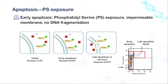7AAD is a nucleic acid dye that cannot penetrate the intact cell membrane of viable or early apoptotic cells. When cells are stained with these two dyes, the viable cells are double negative for Annexin-5 and 7AAD, early apoptotic cells are single positive for Annexin-5, and the double positive group are late apoptotic or necrotic cells.